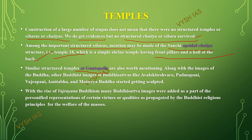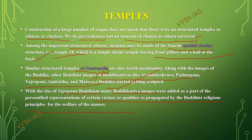The Guntupalli temple has Buddha images and also images of bodhisattvas like Avalokiteshvara, Padmapani, Vajrapani, Amitabha, and Maitreya. With the rise of Vajrayana Buddhism, many bodhisattva images were added to these temples, and these qualities were propagated by Buddhist religious principles for the welfare of the masses.